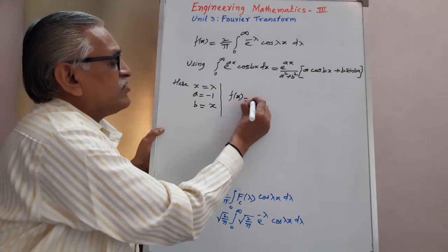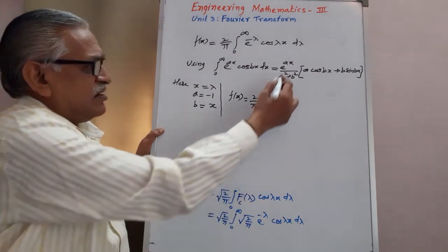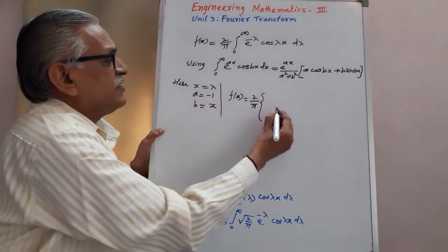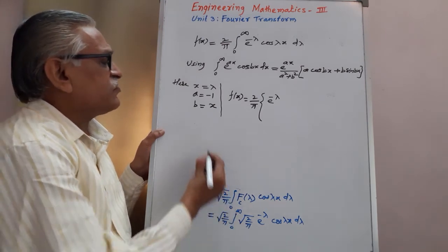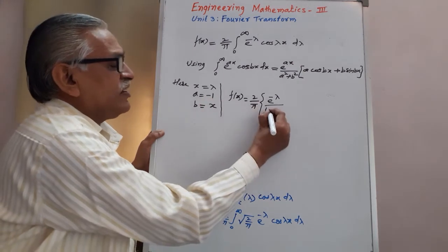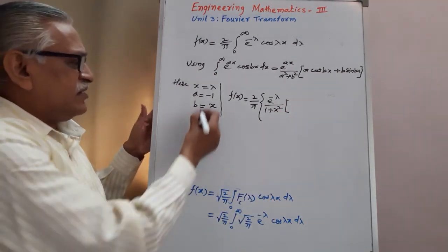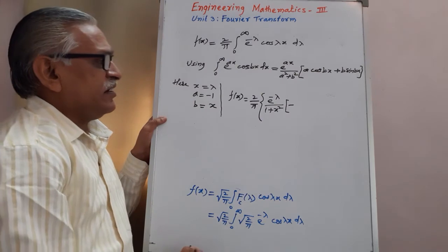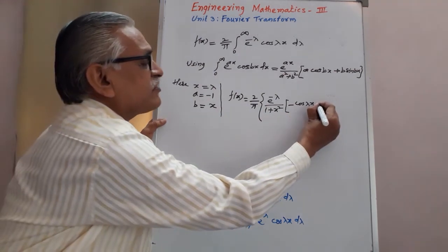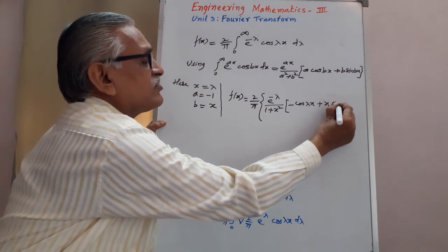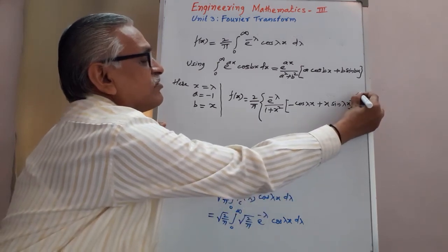Therefore f(x) becomes 2/pi times, applying the standard result: e raised to minus lambda divided by a squared plus b squared — where a squared is 1 and b squared is x squared, so denominator is 1 plus x squared — multiplied by the quantity a cos(lambda x) plus b sin(lambda x), that is minus 1 times cos(lambda x) plus x times sin(lambda x), with limit from zero to infinity.